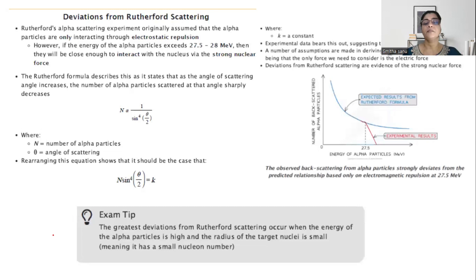An important exam tip: the greatest deviations from Rutherford scattering occur at energies where alpha particles encounter a smaller nucleus. For a smaller nucleus, the energy of the particle will be extremely high because energy and radius are inversely related.